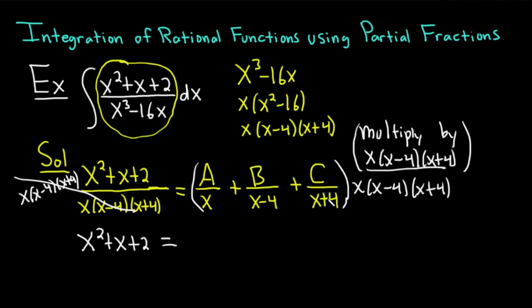So we have A over x times x times x minus 4 times x plus 4. So the x's will cancel. So we're left with A times x minus 4 times x plus 4. Because the x will cancel. For the B over x minus 4, the x minus 4 will cancel. So we're left with B times x times x plus 4. And for the C, the x plus 4 cancels. So we're left with C times x times x minus 4.